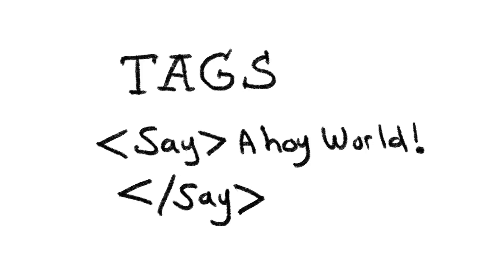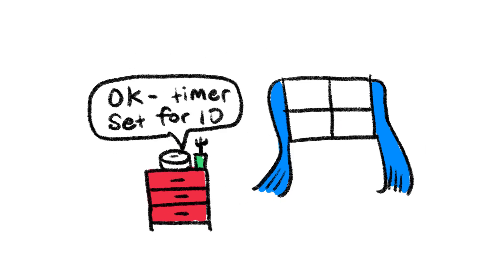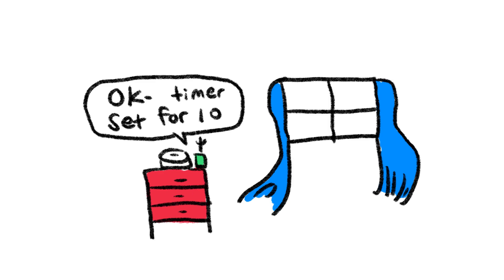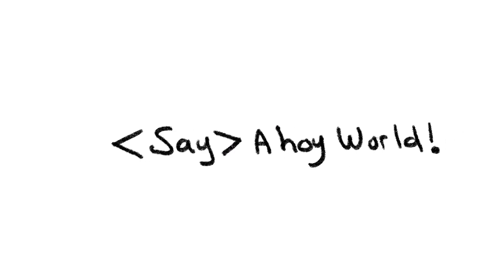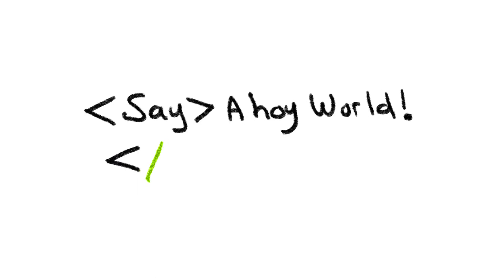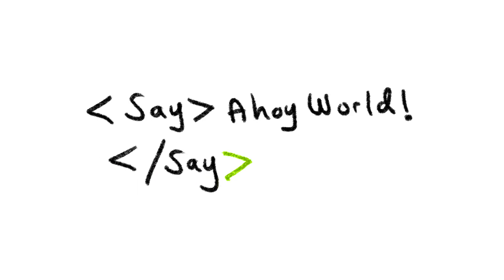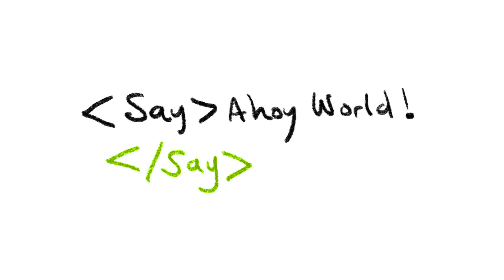TwiML works with tags. So let's learn our first instruction: Say. We can actually make the call say any words we want, and it'll talk just like Alexa. A tag has a less-than sign, the instruction — so in our case, 'Say' — and then the greater-than sign. Then you write what you want it to say. How about we say 'Ahoy, world'? Did you know that ahoy was the first word spoken over the telephone? And then we close the tag: that's a less-than sign, a forward slash, your instruction, and a greater-than sign. There's the open tag, here's the body, and then there's the closing tag. See the forward slash? Don't worry, you'll get used to it.